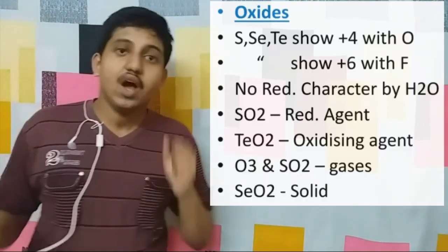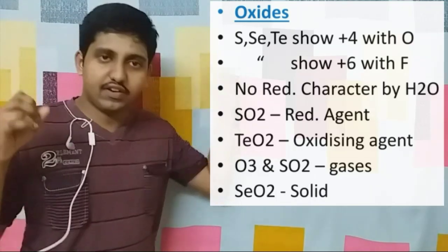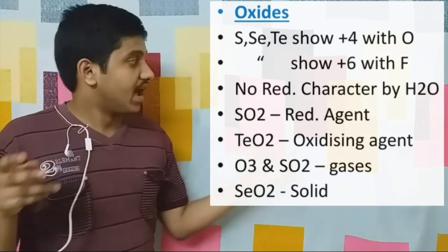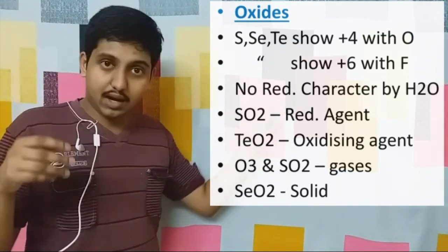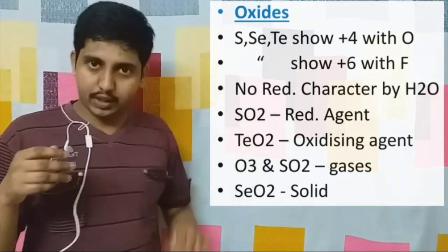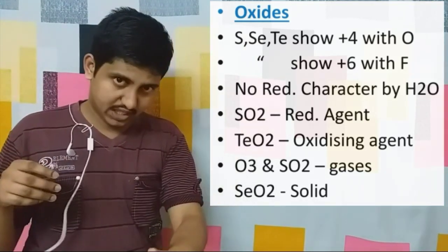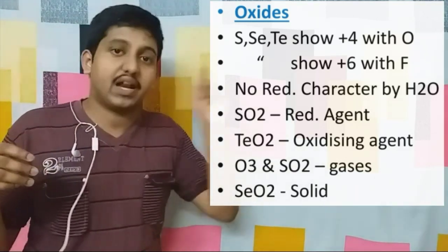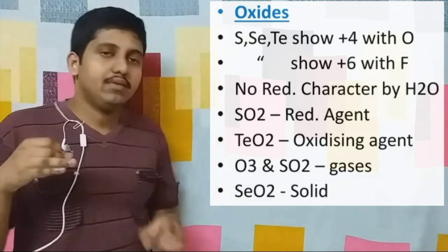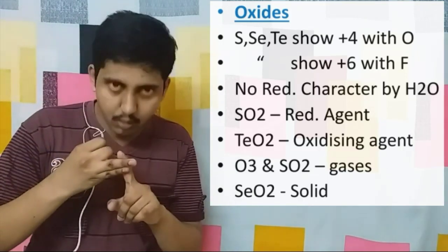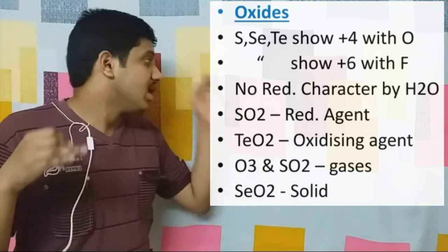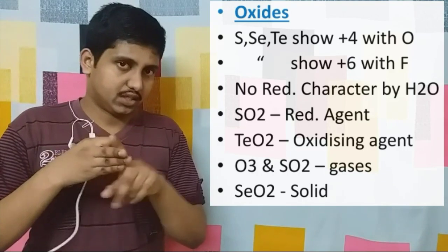Next, regarding oxides. Sulfur, selenium, and tellurium can form oxides — that is, oxygen combining with elements of the same group. Sulfur, selenium, and tellurium combine with oxygen at the +4 oxidation state, and they combine with fluorine at the +6 oxidation state. Regarding the oxides, the reducing character is absent for H2O, but moist SO2 is a reducing agent while TeO2 is an oxidizing agent. Remember those points.